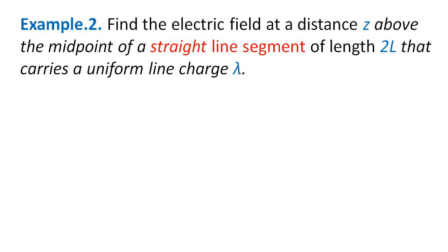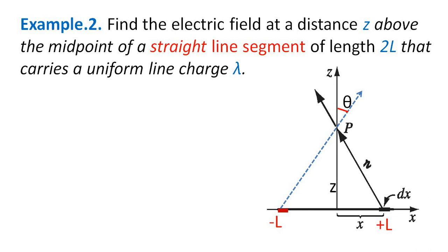Find the electric field at a distance Z above the midpoint of a straight line segment of length 2L that carries a uniform line charge lambda. P is a point at a distance Z from the midpoint of this segment, which carries a uniform line charge lambda.